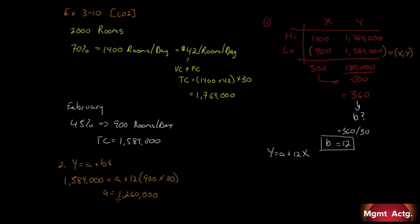So, that is our fixed cost portion. So, what does our formula look like? y equals $1,260,000 plus 12x. That's our linear expression for costs.